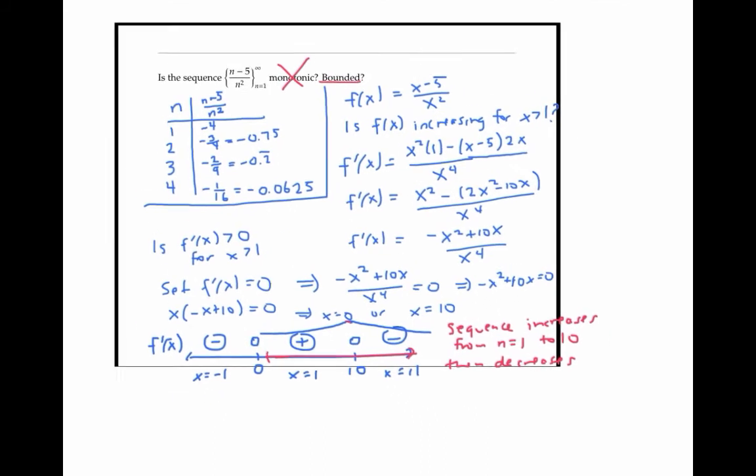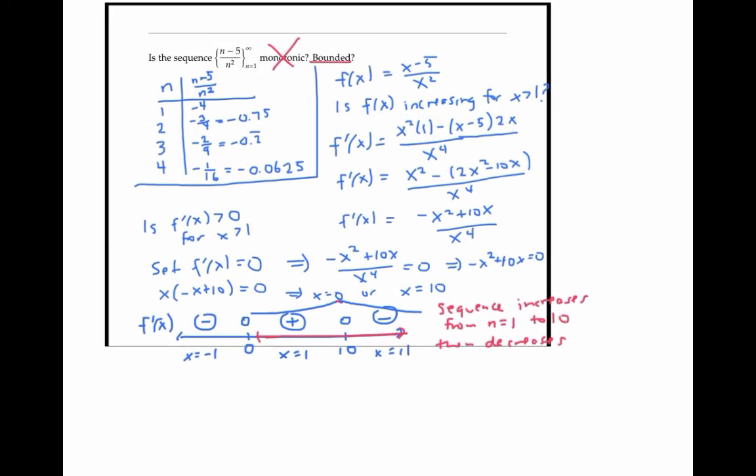Therefore, our sequence is bounded above by its value at 10, which is 10 minus five over 10 squared, or 1/20.